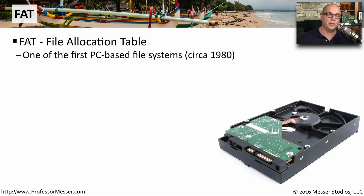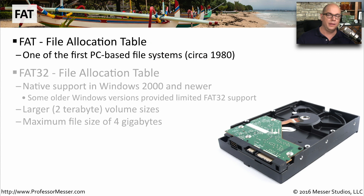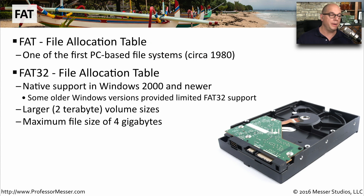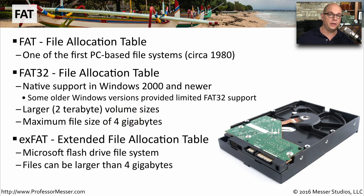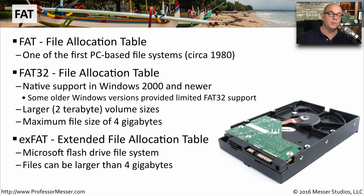One of the very first file systems on computers was FAT, which stands for File Allocation Table. You may see FAT32 on a number of Windows systems — this allowed very large volume sizes but limited the maximum size of any particular file to four gigabytes. If you're using a flash drive in Windows, it's probably using a file system called exFAT, which stands for Extended File Allocation Table. It allows you to use large drives and store files larger than four gigabytes.